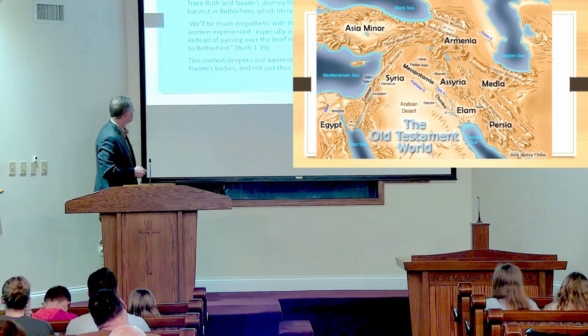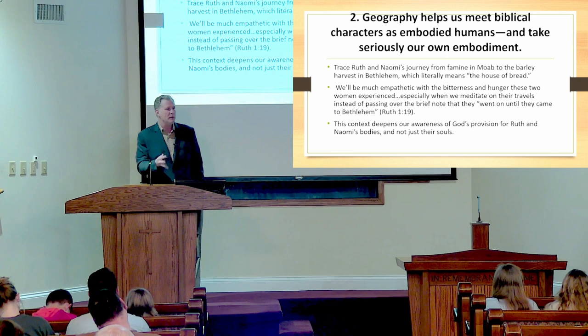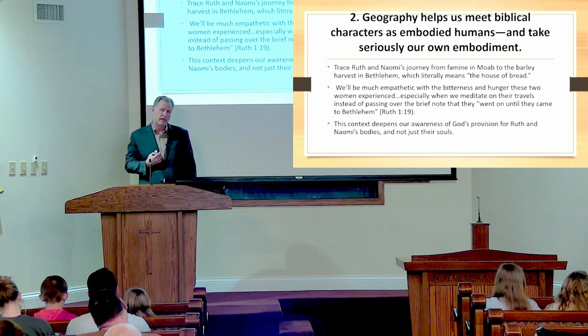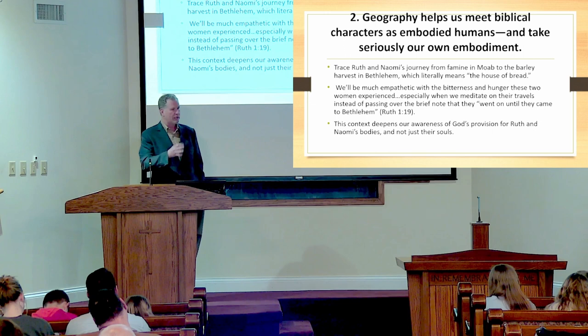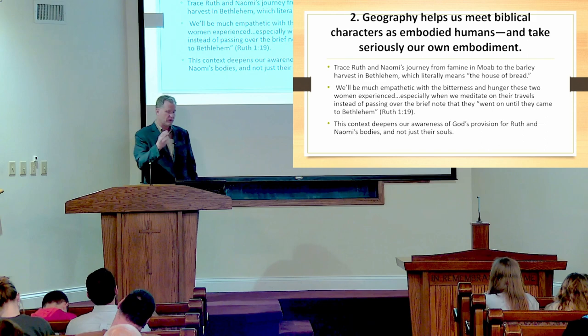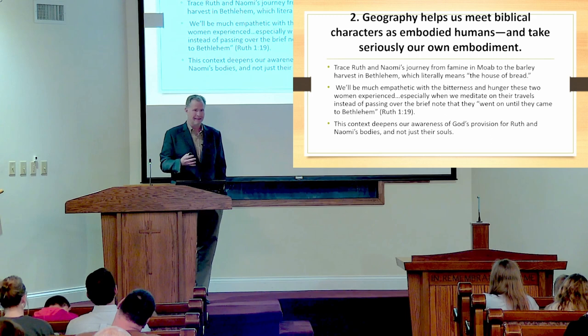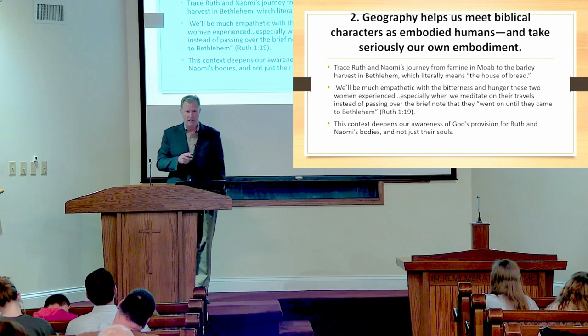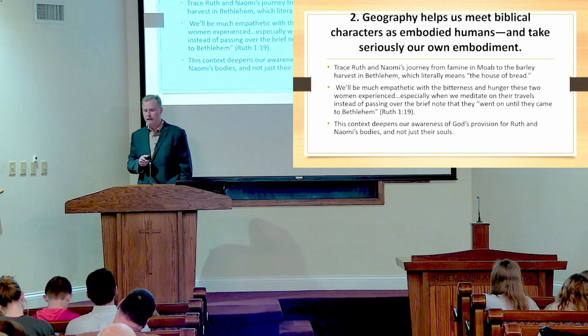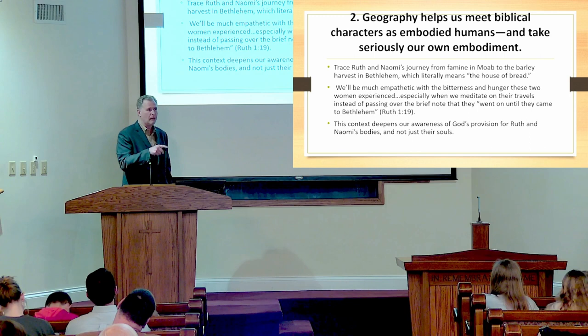Number two: geography helps us to meet biblical characters as real humans and not as fictitious characters. It helps us to take seriously our own embodiment. Ruth and Naomi's journey came from famine in Moab, and where did they go? They went to a place called Bethlehem, which means 'house of bread.' There's this man named Boaz who was going to marry Ruth, and Boaz was the son of a couple named Salmon and Rahab — Rahab being from Jericho.